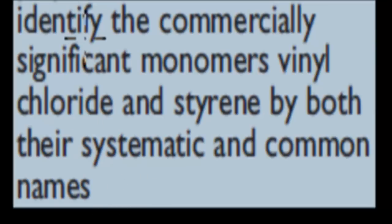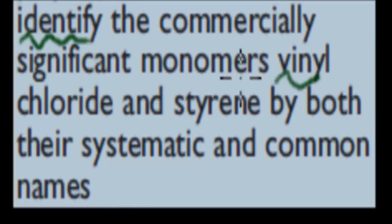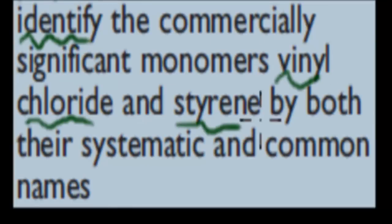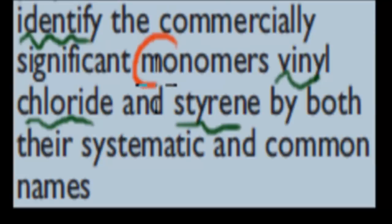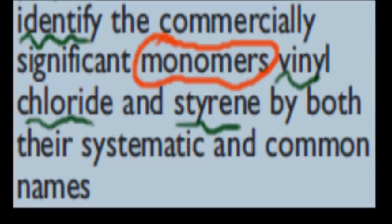So the dot point says: identify the commercially significant monomers, vinyl chloride and styrene, by both their systematic and common names. One really important part of this dot point, where some students often get confused and write the wrong answer, is that it says monomers.